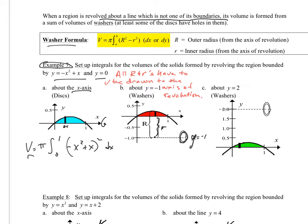So with this washer formula, what we're doing is we're subtracting out the volume of the hole. So that would be the hole.